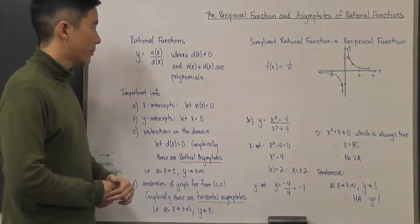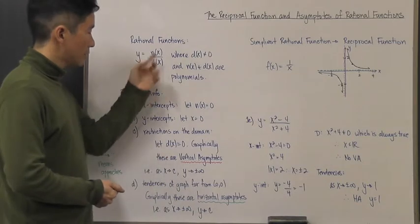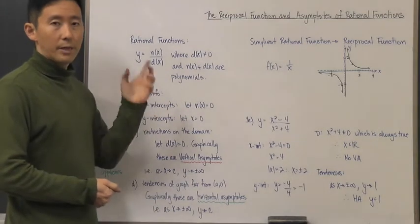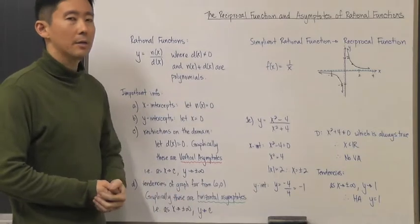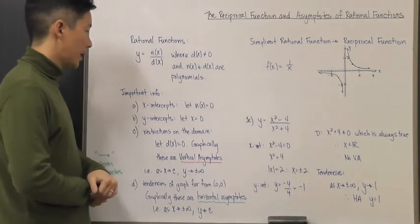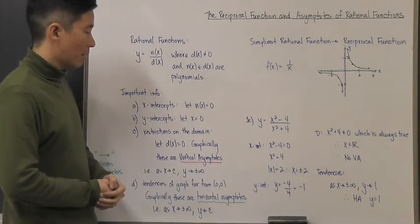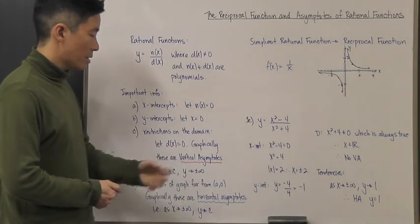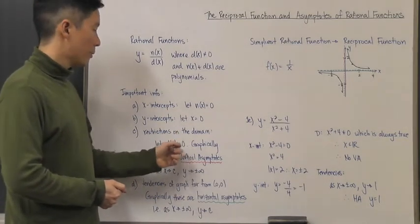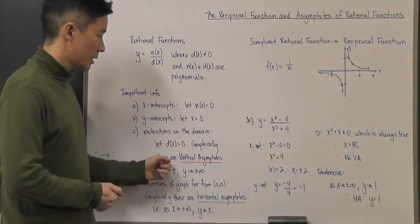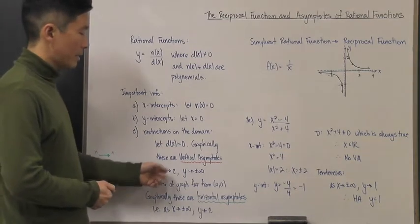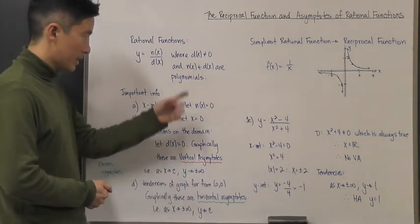We also want to look at restrictions on the domain. Algebraically, we find those restrictions by letting d(x) equal zero. If d(x) equals zero, those values of x cannot be included in the domain because they would give a denominator of zero, which is impossible. Graphically, those domain restrictions are called vertical asymptotes — that is a very key term.